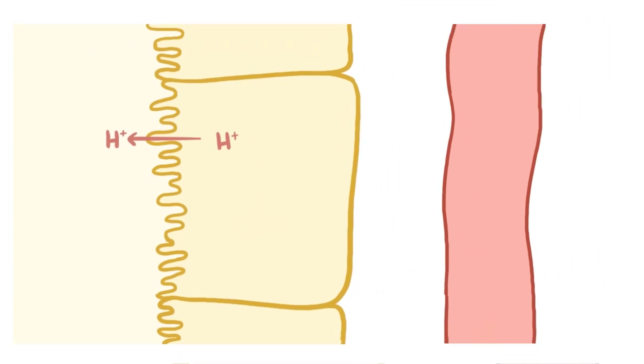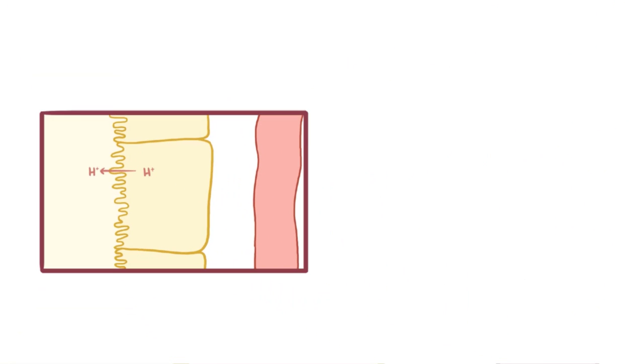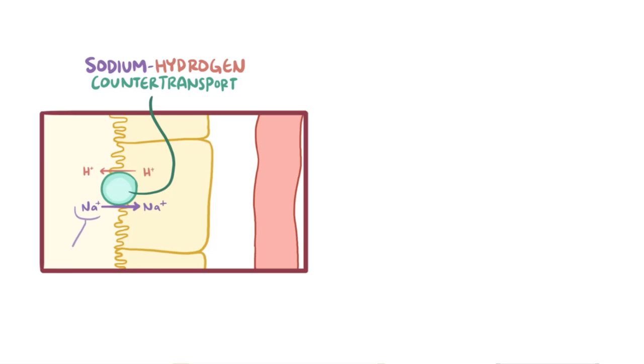Hydrogen ions, with their positive charge, don't want to naturally pass through the cell membranes and into the urine. They need to be pushed out, and there are two mechanisms that do this. One mechanism is a sodium-hydrogen countertransport. With this, a carrier protein in the apical wall binds a hydrogen ion from the cell and a sodium ion in the tubular fluid. As that sodium ion is pushed in, the hydrogen ion gets pushed out, kind of like a revolving door.